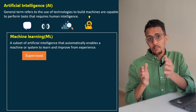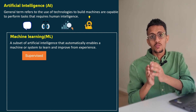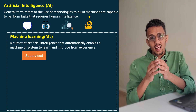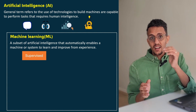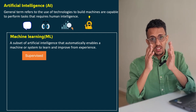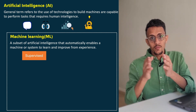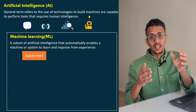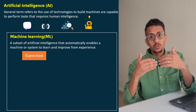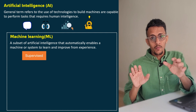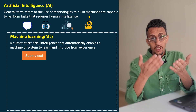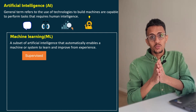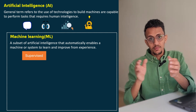The input data could be, for example, hundreds of images of cats, and then we tell the algorithm that these are cats. And then we can provide another hundreds of images of dogs, and then we tell the algorithm that these are dogs. The algorithm will learn from this input data and should be able to distinguish between a cat and a dog. Whenever we provide a new image, the algorithm should be able to tell us if this is a cat or a dog.